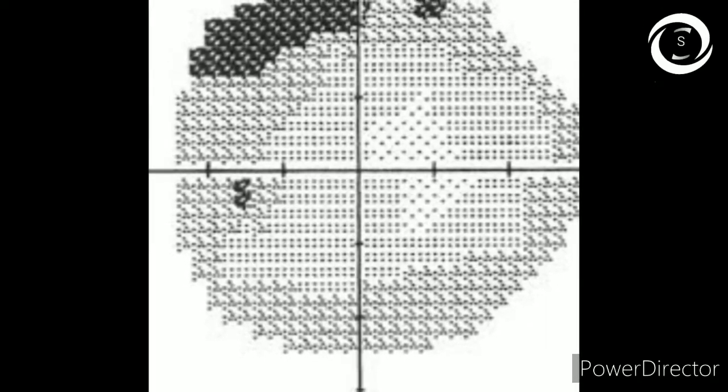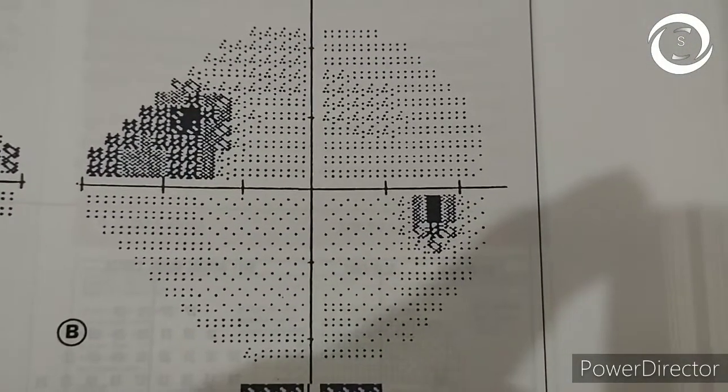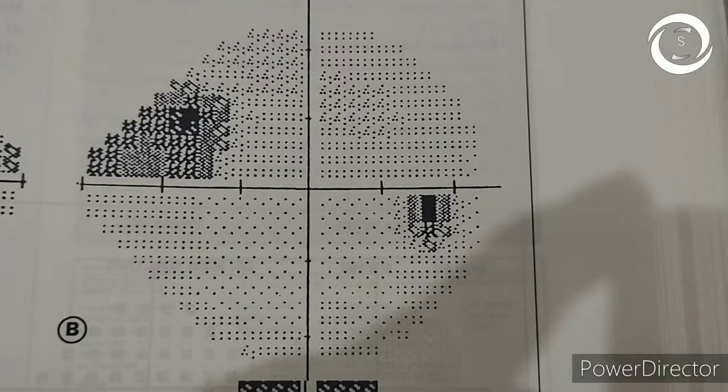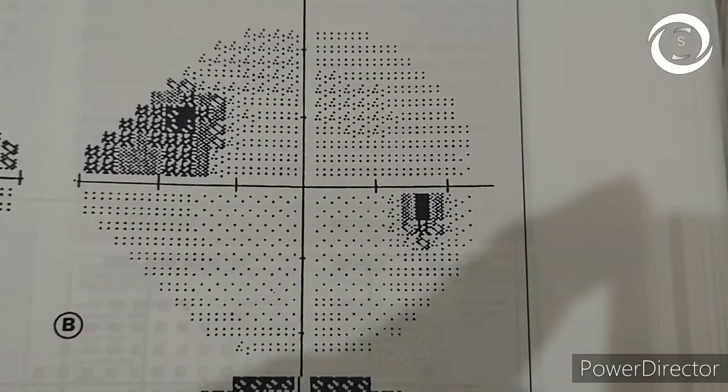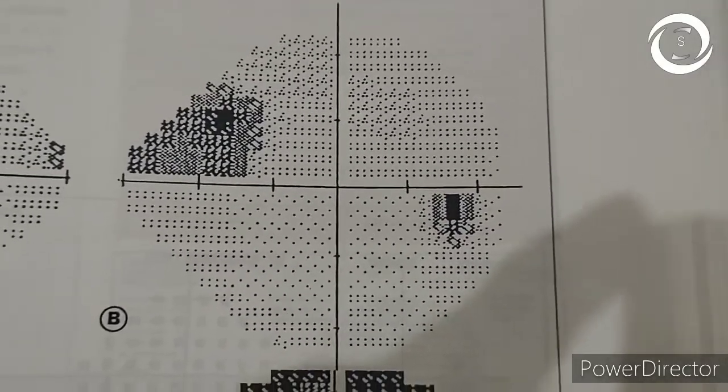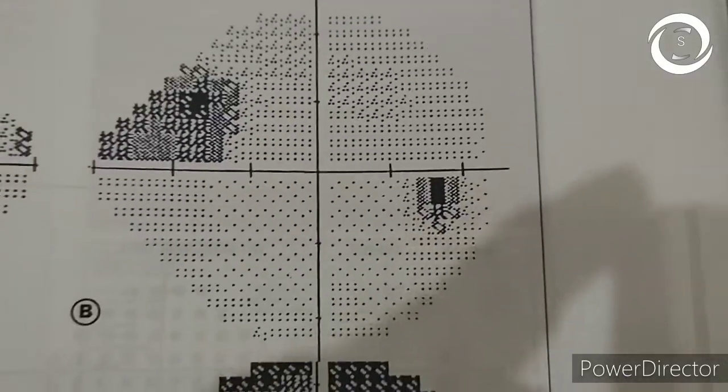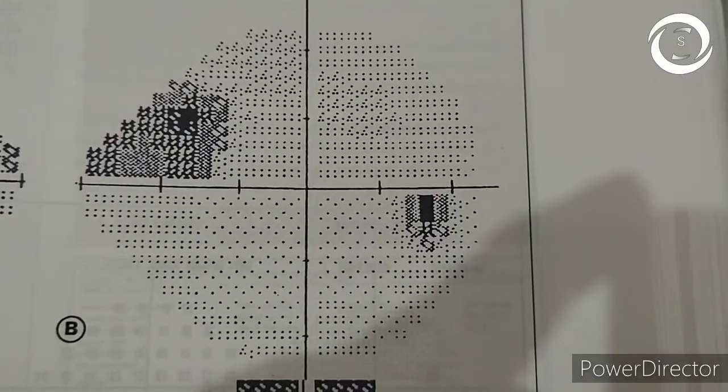Now comes to the nasal step. Again, see the blind spot. Nasal step is always opposite to the blind spot. Here nasal step is seen on the left, superior to the horizontal midline, and it represents the difference in sensitivity above and below the horizontal midline in the nasal field.